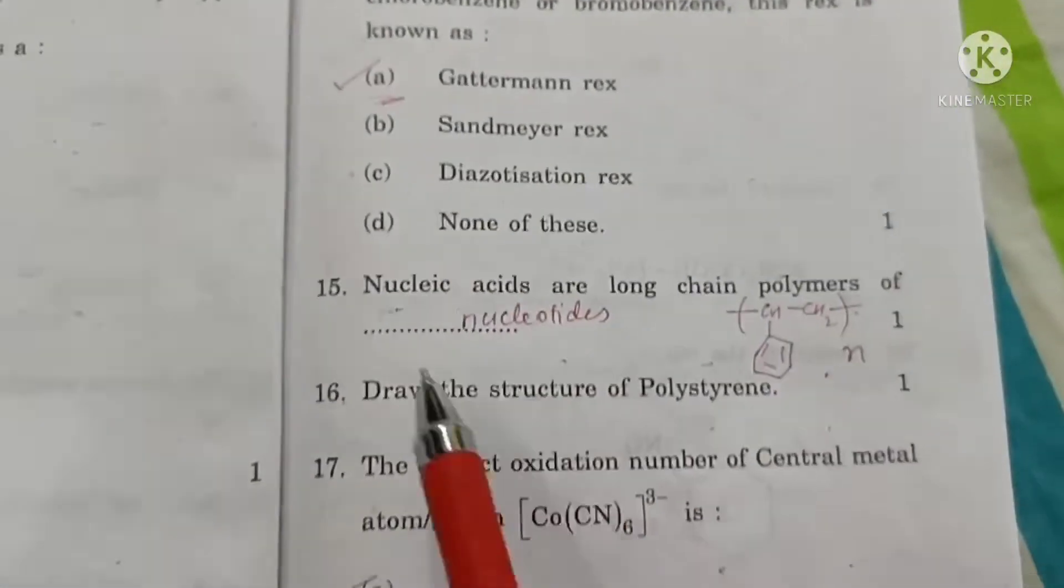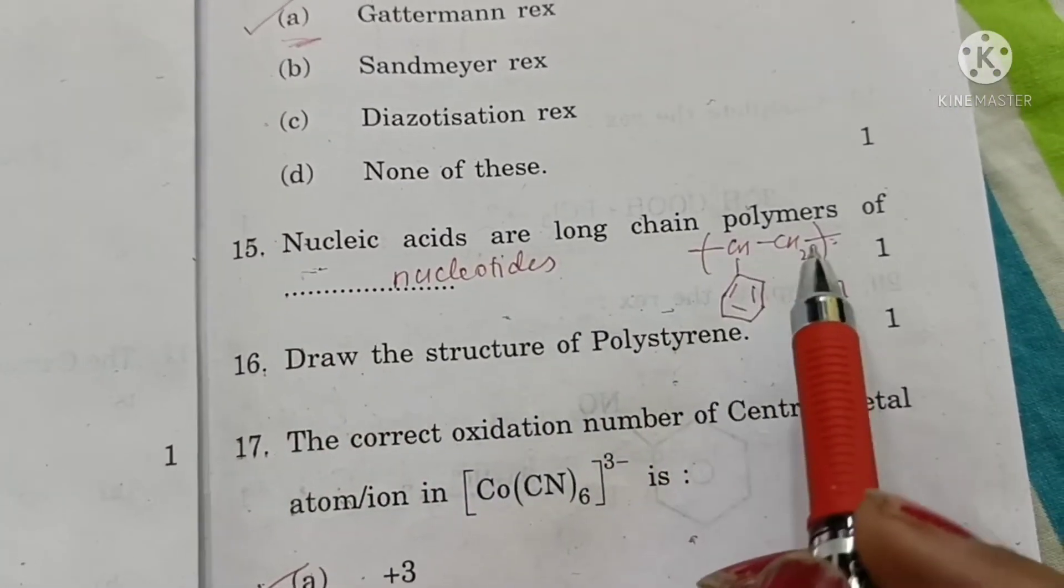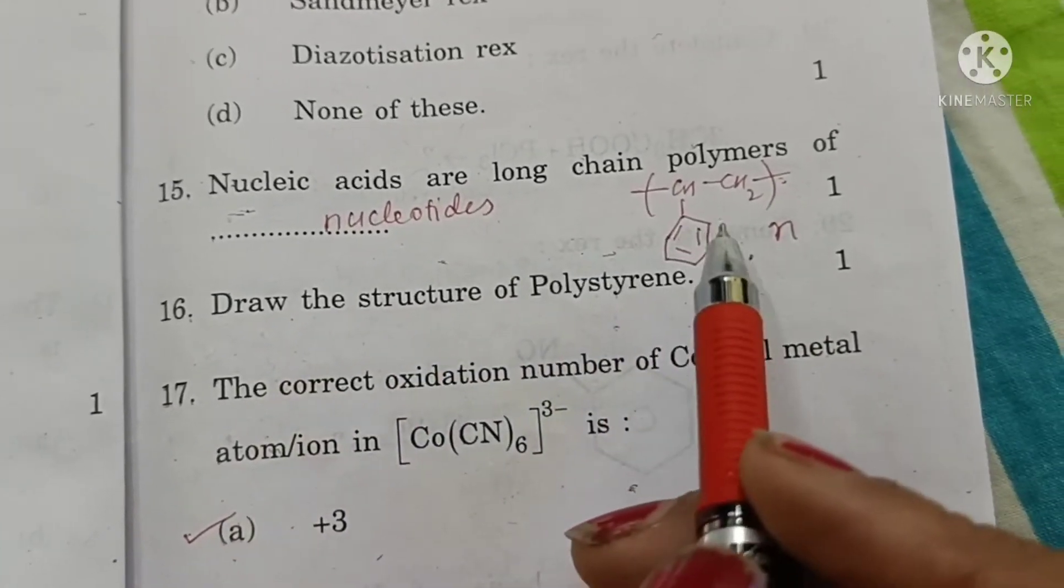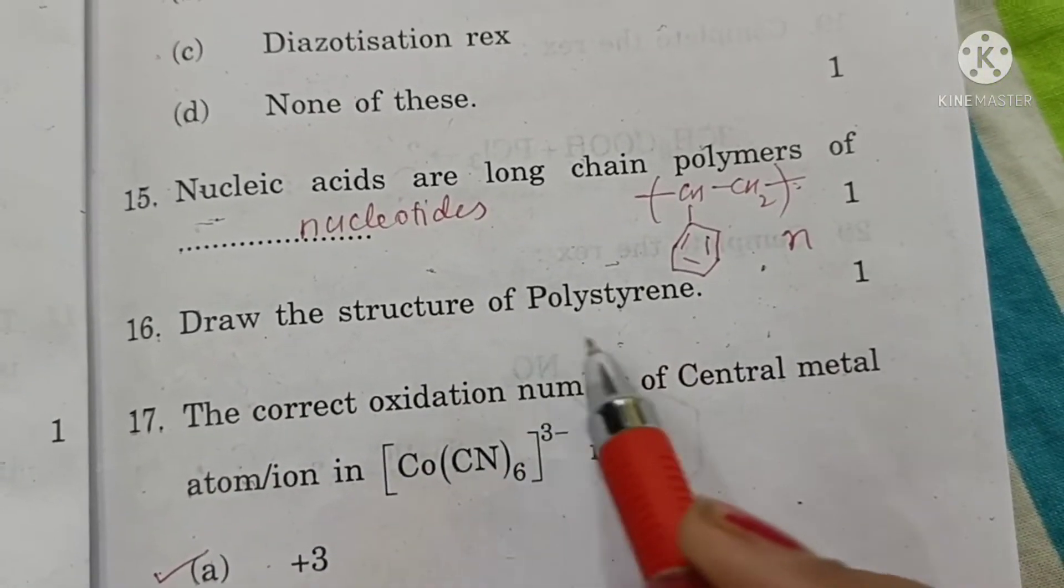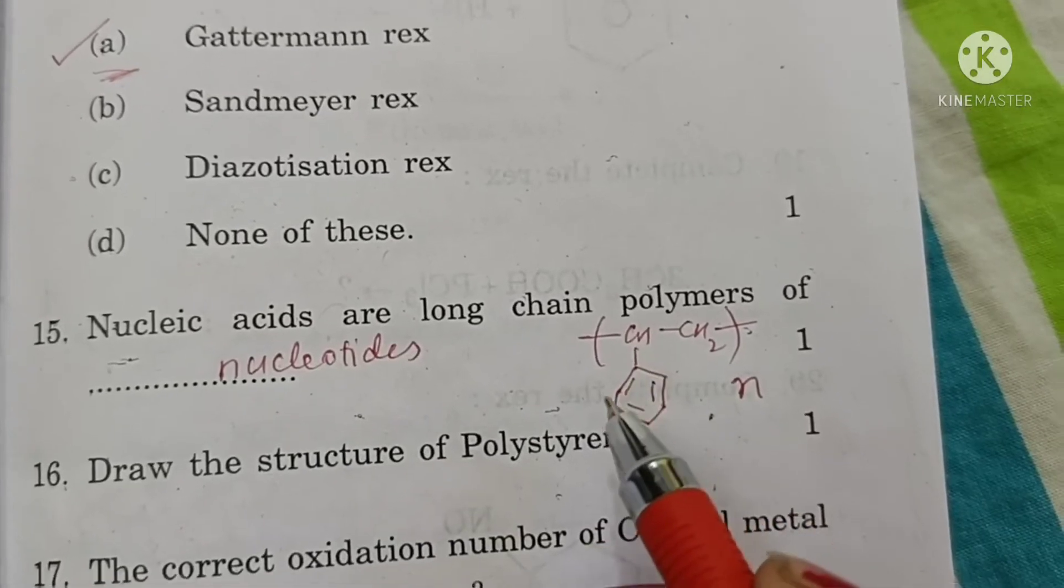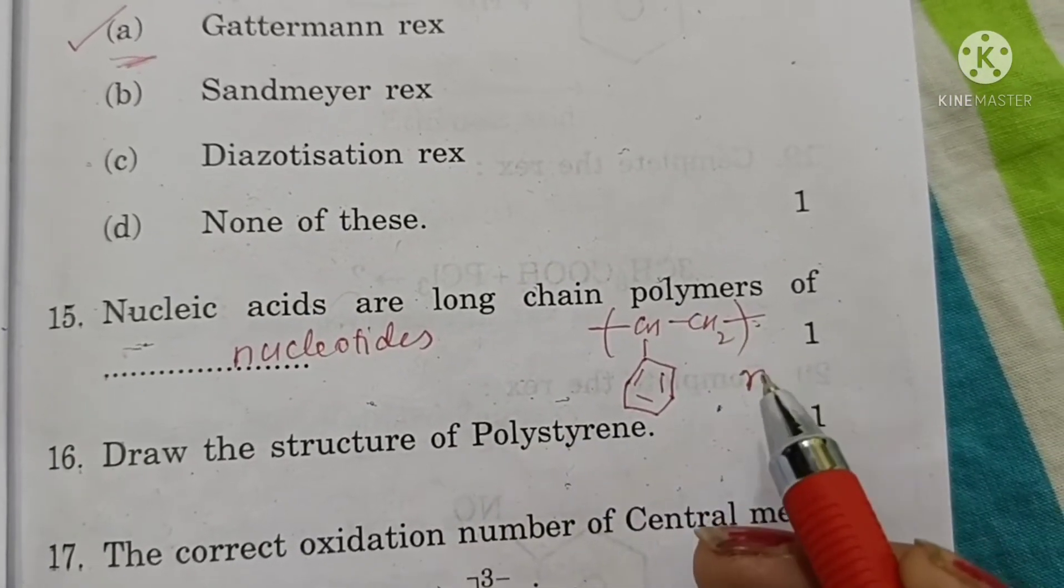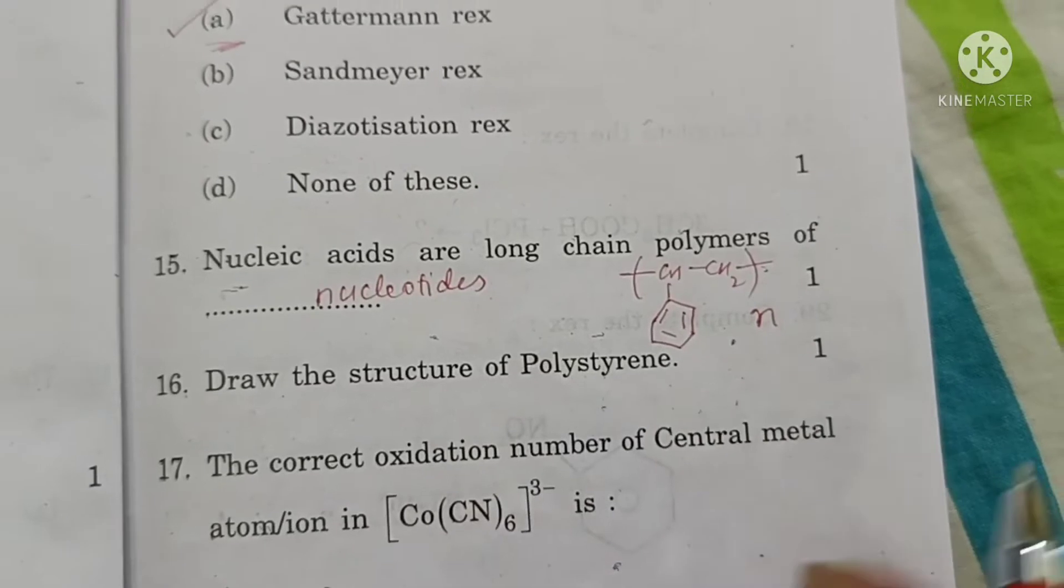Benzene-diazonium salt solution on reaction with halogen acids in presence of copper powder gives chlorobenzene or bromobenzene. This reaction is known as Gataman reaction. With copper powder, it is Gataman. Nucleic acids are long chain polymers of nucleotides. Draw the structure of polystyrene. C6H5CH single bond CH2 when repeated N times forms polystyrene.